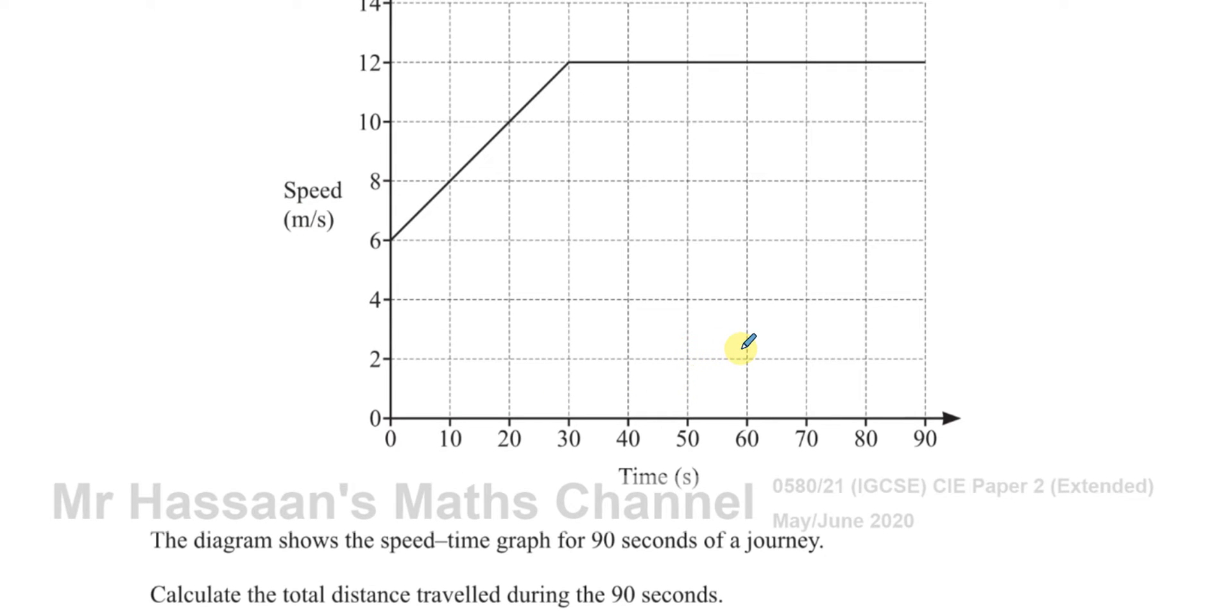From a speed-time graph, the distance is given by the area underneath the graph. So here we have this compound shape. It's like a trapezium and a rectangle. You could either split it up into a trapezium here and a rectangle there, or this way. Both of them will give you the same answer.